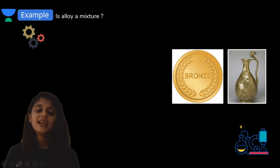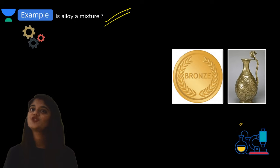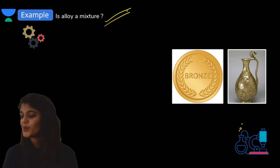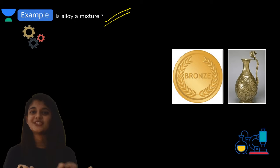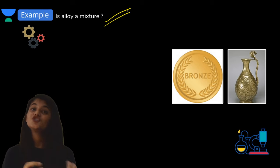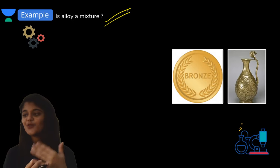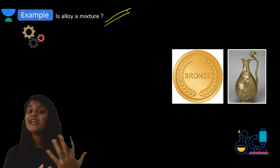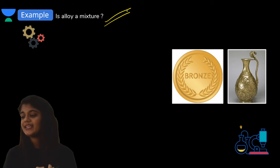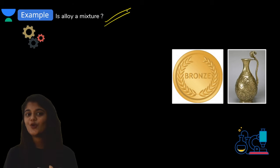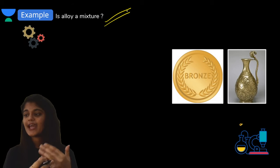Let's move on. There's a question for you - if you heard last class you will answer this. Is alloy a mixture? We have seen different types of mixtures: solid-solid, solid-liquid, liquid-liquid, gas-gas, gas-solid. So now you should be able to say whether alloy is a mixture - yes or no - and explain why.